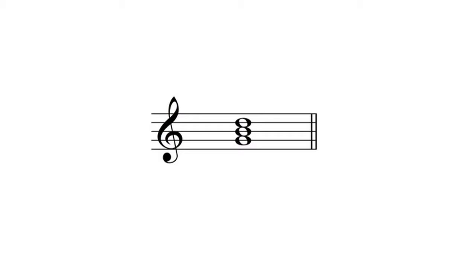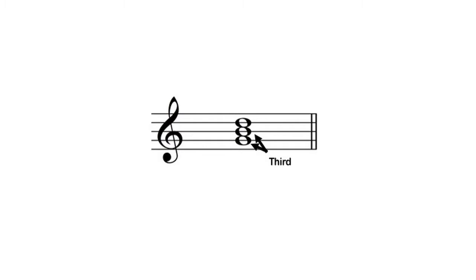At its most basic level, it is a chord that consists of three unique pitches and, when it's spelled in its most compact form, is built by stacking two thirds on top of a pitch, which we call the root.